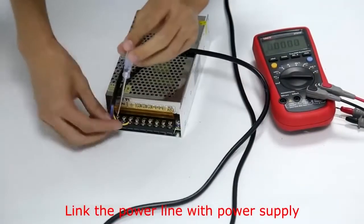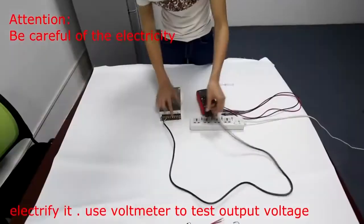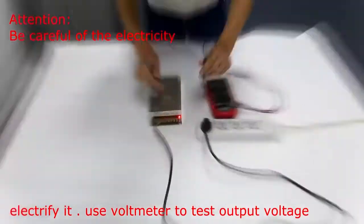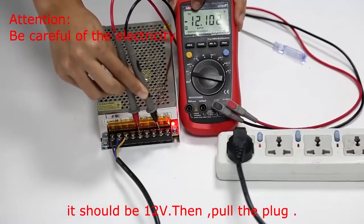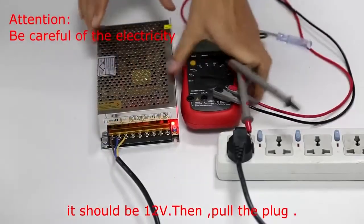Link the power line with power supply. Electrify it. Use a voltmeter to test the output voltage. It should be 12V. Then, pull the plug.